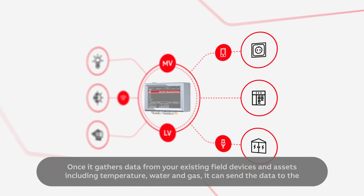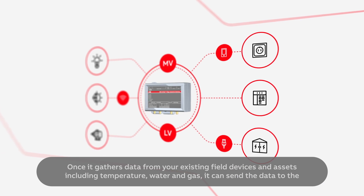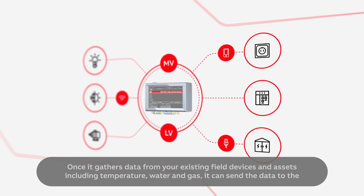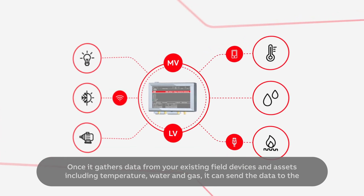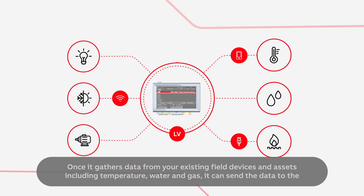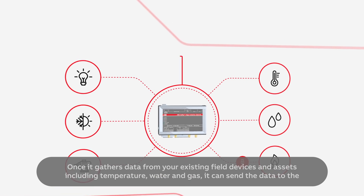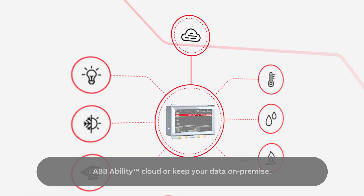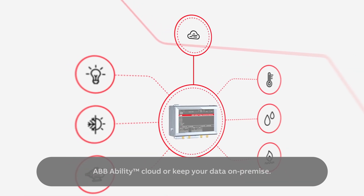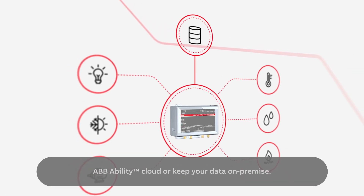Once it gathers data from your existing field devices and assets — including temperature, water, and gas — it can send the data to the ABBAbility Cloud or keep your data on-premise.